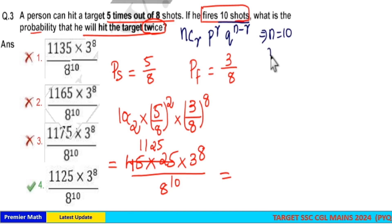Out of this 10 times you should hit the target 2 times. So R is equal to 2. N is equal to 10 and R is equal to 2. And here P raised to R means probability of success and Q raised to N minus R means probability of failure.